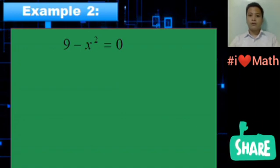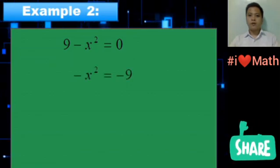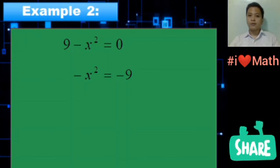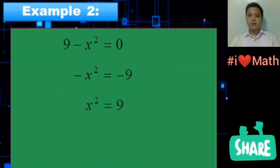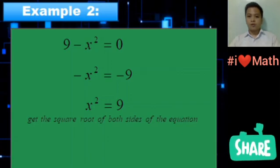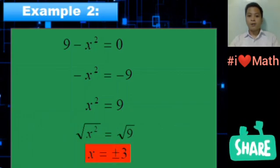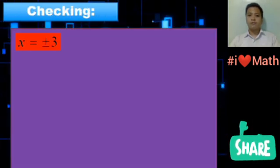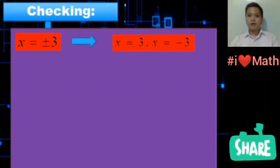Example 2: 9 - x² = 0. Transpose 9 to the right side — we will have -x² = -9. Divide both sides of the equation by -1. Get the square root of both sides of the equation and we will have x = ±3. This can be written as x = 3 and x = -3.